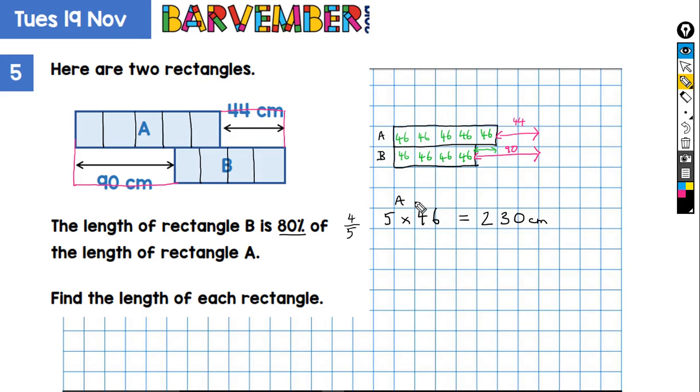And then rectangle B, let's have a look, is going to be four times 46. So let's have a look: 46 times four. That's 184. So four times 46 equals 184 centimeters.